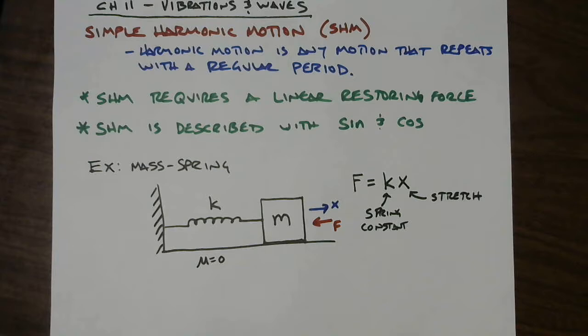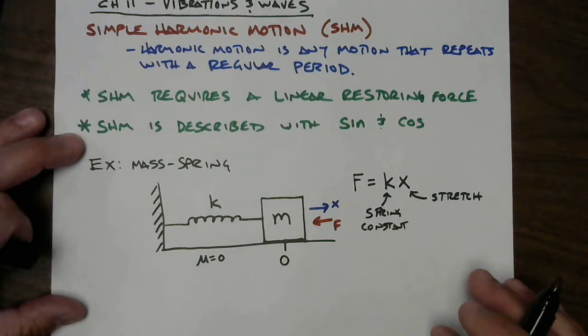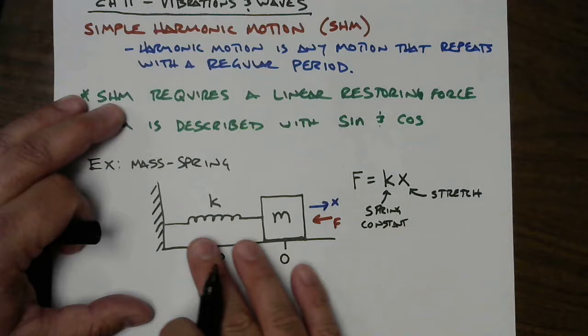A lot of people write this as F = -kx because if you displace the object out this way in the positive direction of displacement, then the force you get is in the opposite direction. It is indeed a restoring force, so it will always bring things back to the center.